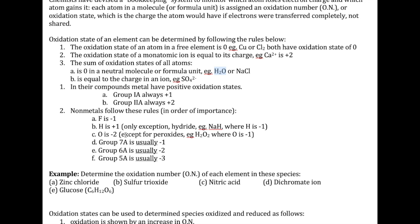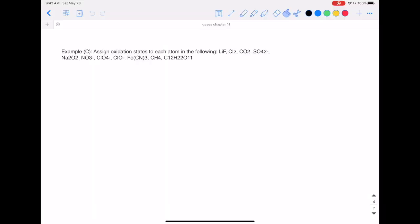For something like H2O, start with H, which is assigned plus one. Because there are two H's, that means there's plus two total. The total charge is neutral, so it's zero. Therefore oxygen must be negative two to balance out the plus two.